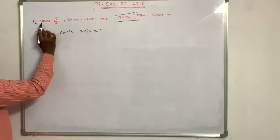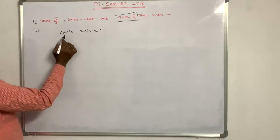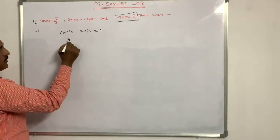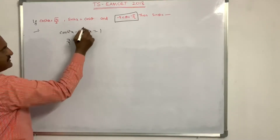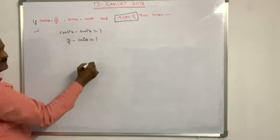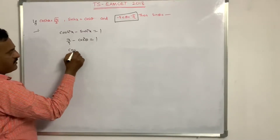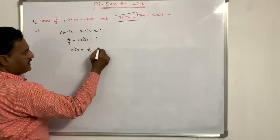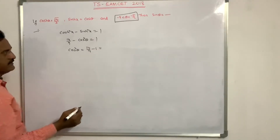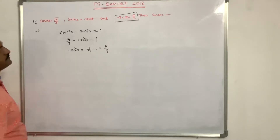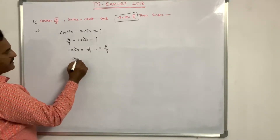Substituting: cosh(x) = √14/3 and sinh(x) = cosθ into cosh²x − sinh²x = 1 gives 14/9 − cos²θ = 1, so cos²θ = 14/9 − 1 = 5/9.